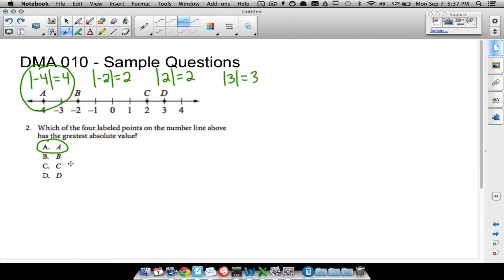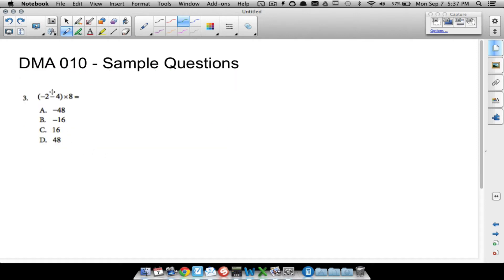Number three is an order of operations problem. A reminder: please excuse my dear aunt Sally. We want to work with parentheses, then exponents, then multiply and divide from left to right, whichever one comes first. You don't always multiply before you divide. Then add and subtract from left to right, whichever one comes first. Let's look at this example - I'm going to write it a little bit bigger.